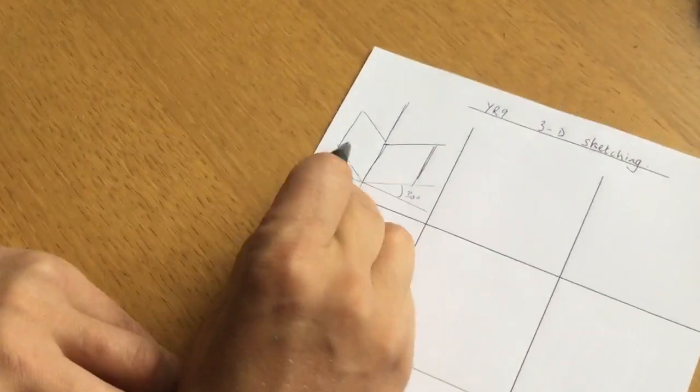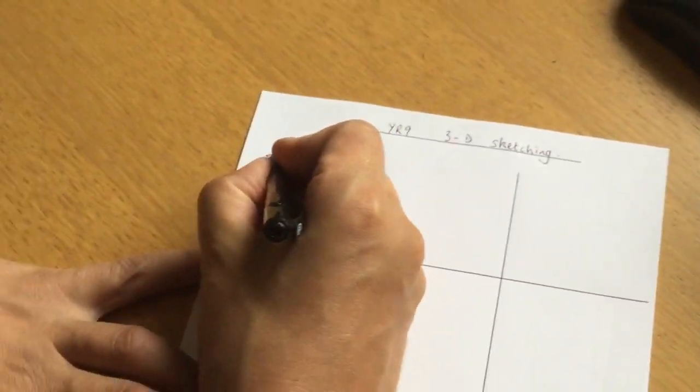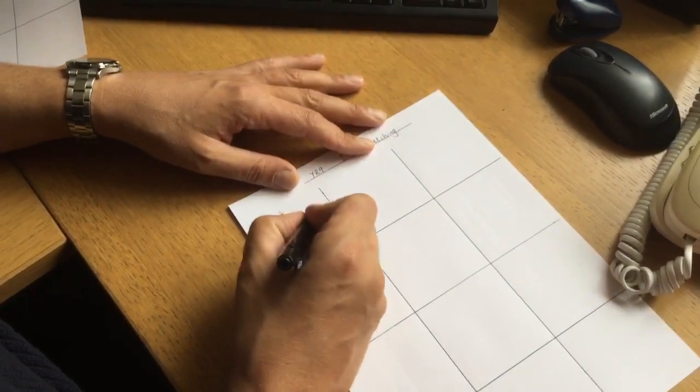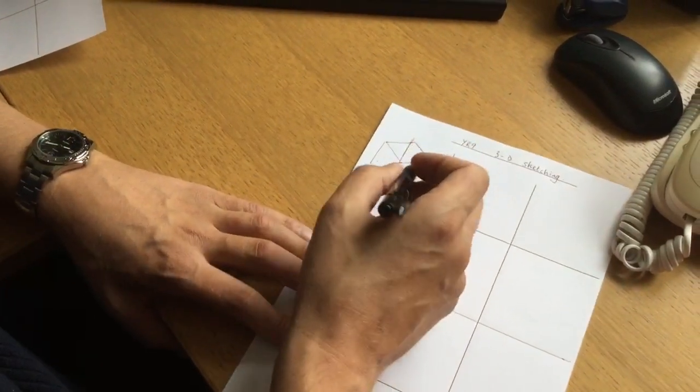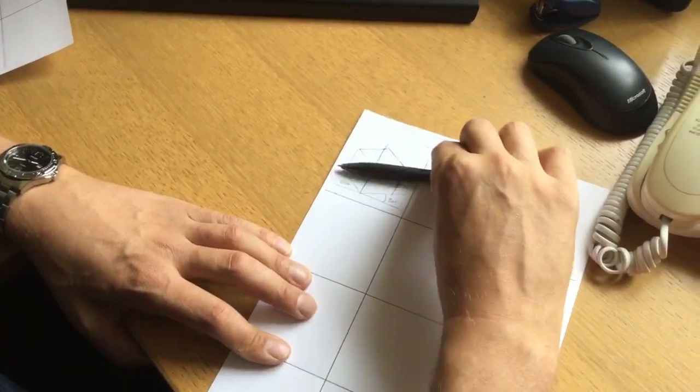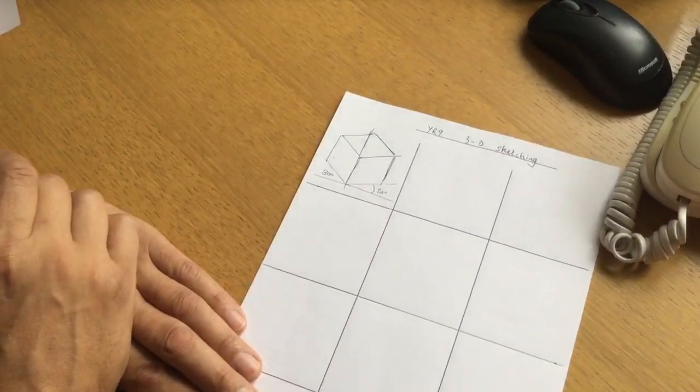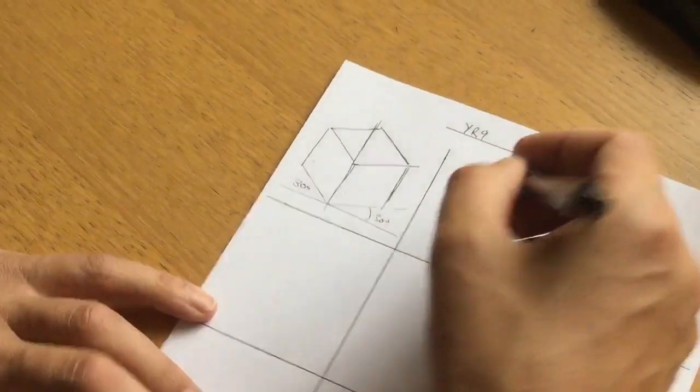These lines here, one, two, three, these are the vertical edges of the cube. And all the other lines which would normally be horizontal, they are at 30 degrees to the horizontal, and they're all parallel to each other. So there's your initial cube. Let's do another one.